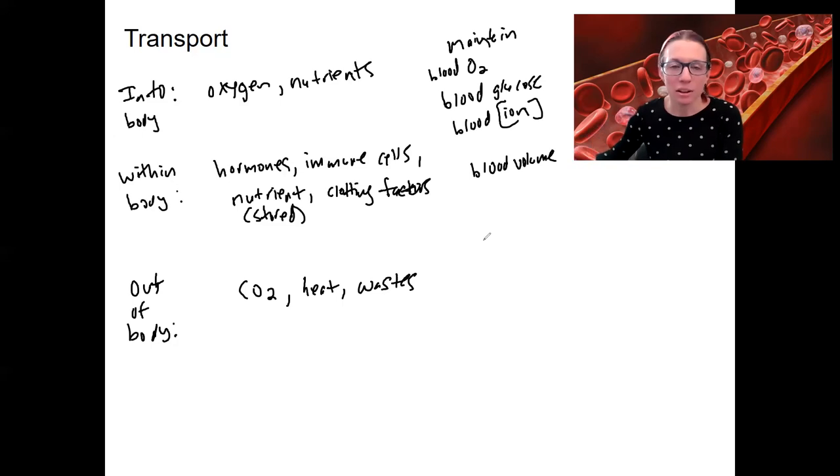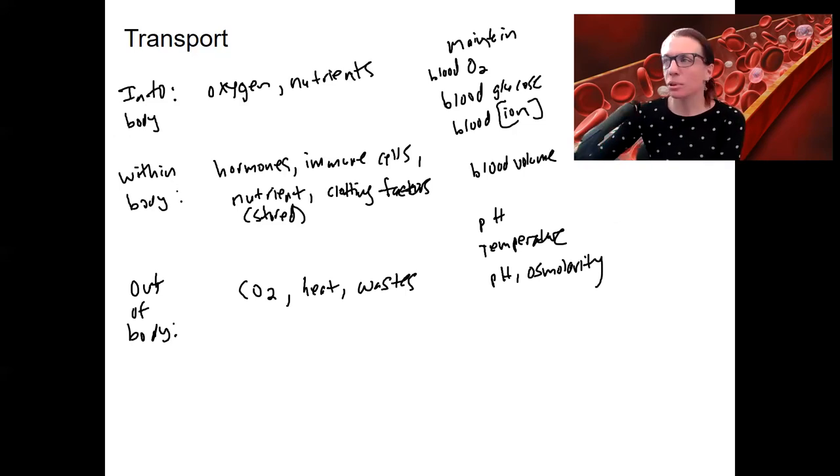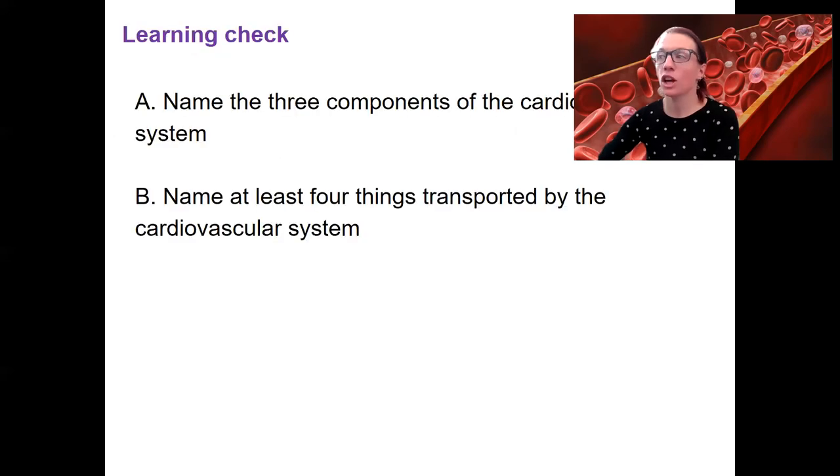And then CO2 is actually maintaining pH or maintaining temperature. And then with wastes, it's actually quite a bit. We're maintaining pH, osmolarity, probably some other things, ion concentrations. So example of some things that are transported and how that relates to maintaining homeostasis and integration with other organ systems.